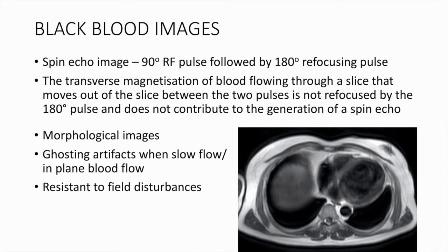The spin echo sequence with a 90-degree RF pulse and 180-degree refocusing pulse provides black blood contrast. This is because the transverse magnetization of blood flowing through a slice moves out of the slice between the two pulses and is not refocused by the 180-degree pulse, thus not contributing to signal generation. Black blood images are used as morphological images and are resistant to field disturbances.